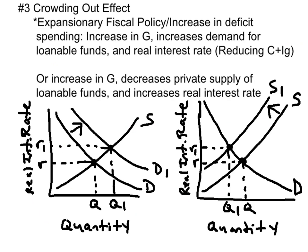The next concept is the crowding out effect, which is associated with expansionary fiscal policy — that is, when the government increases its deficit spending. If the government increases spending, it has to finance that by borrowing money. It increases demand for loanable funds and therefore raises the real interest rate. The increase in real interest rate will reduce private sector spending — that is, consumption and gross investment. The loanable funds market shows the increase in demand and increase in real interest rate from deficit spending. Alternatively, the increase in government spending reduces the private supply of loanable funds, causing a leftward shift, raising real interest rates and reducing consumption and gross investment.